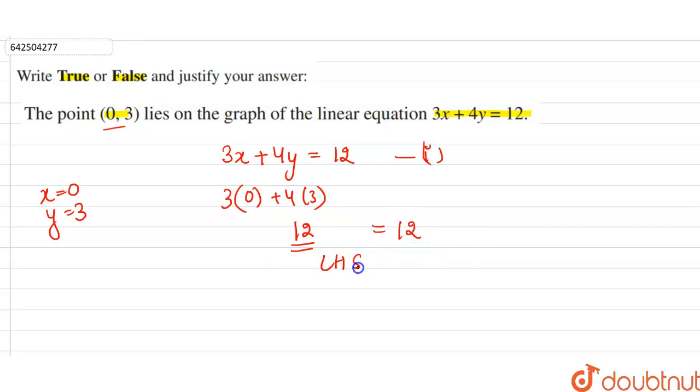We can say LHS is equal to RHS. So we can say that this point (0,3) lies on the graph of the linear equation 3x + 4y = 12.